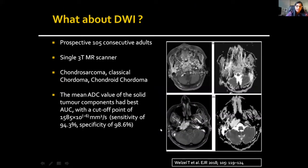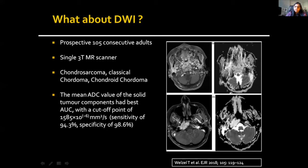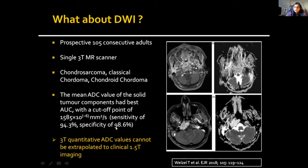Regarding DWI, a number of studies have looked at both qualitative and quantitative DWI. One particularly interesting recent prospective study looked at 105 patients on a single 3T scanner, examining quantitative ADC values of chondrosarcoma versus chordoma. They showed that chondrosarcomas tend to have a higher mean ADC value compared to chordoma and defined a cutoff value to distinguish them with relatively good specificity. However, this study is limited in that quantitative 3T ADC values cannot be directly extrapolated to clinical 1.5T imaging, which is the workhorse.